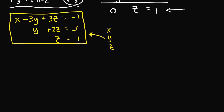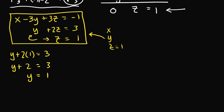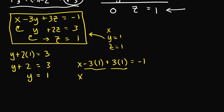Now let's use back substitution to find x, y, and z. From the third equation, z equals one. Substituting into the second equation: y plus 2 times 1 equals 3, so y plus 2 equals 3, meaning y equals one. Substituting both into the first equation: x minus 3 times 1 plus 3 times 1 equals negative one. That gives x minus 3 plus 3 equals negative one, so x equals negative one.